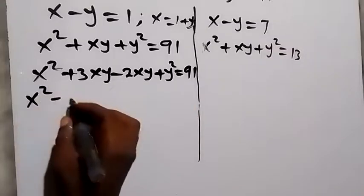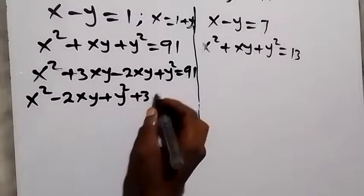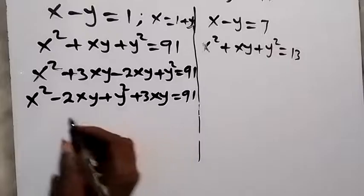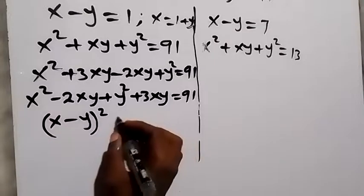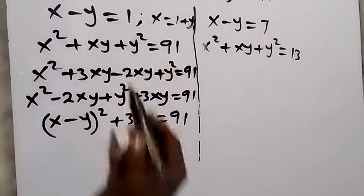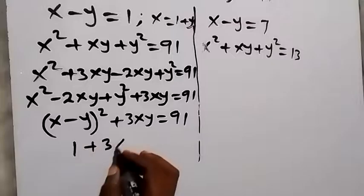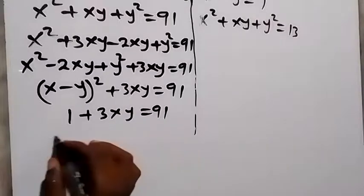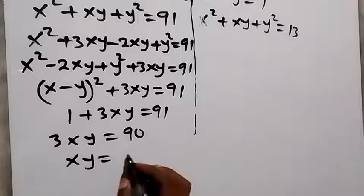We rewrite the second equation as x squared minus 2xy plus y squared plus 3xy equals 91. The first three terms form x minus y, all squared, plus 3xy equals 91. Since x minus y equals 1, we have 1 squared plus 3xy equals 91, giving us 1 plus 3xy equals 91. Taking 1 to the other side: 3xy equals 90, so xy equals 30.